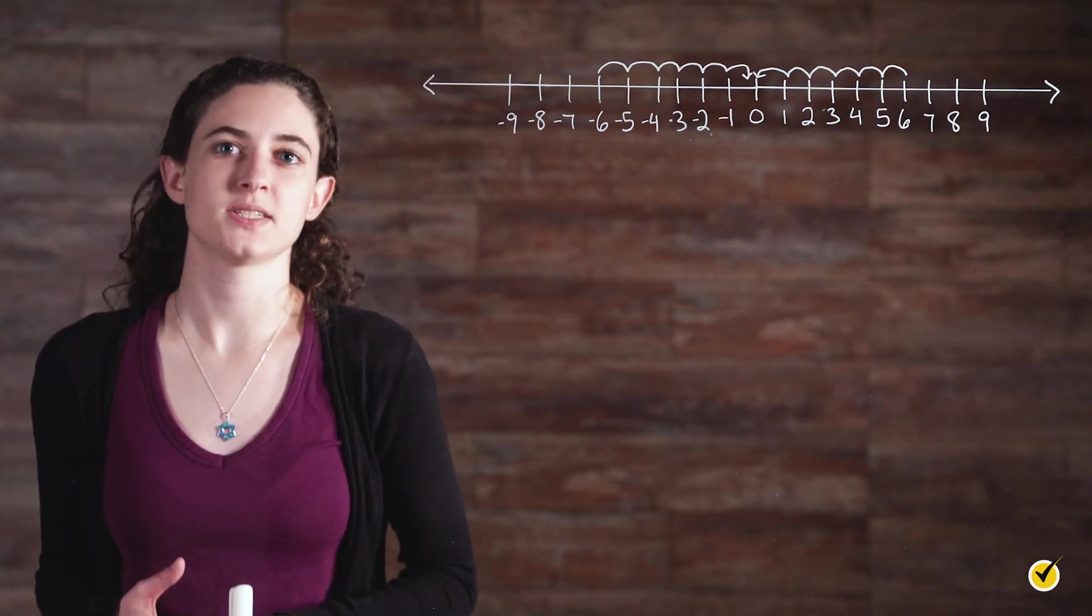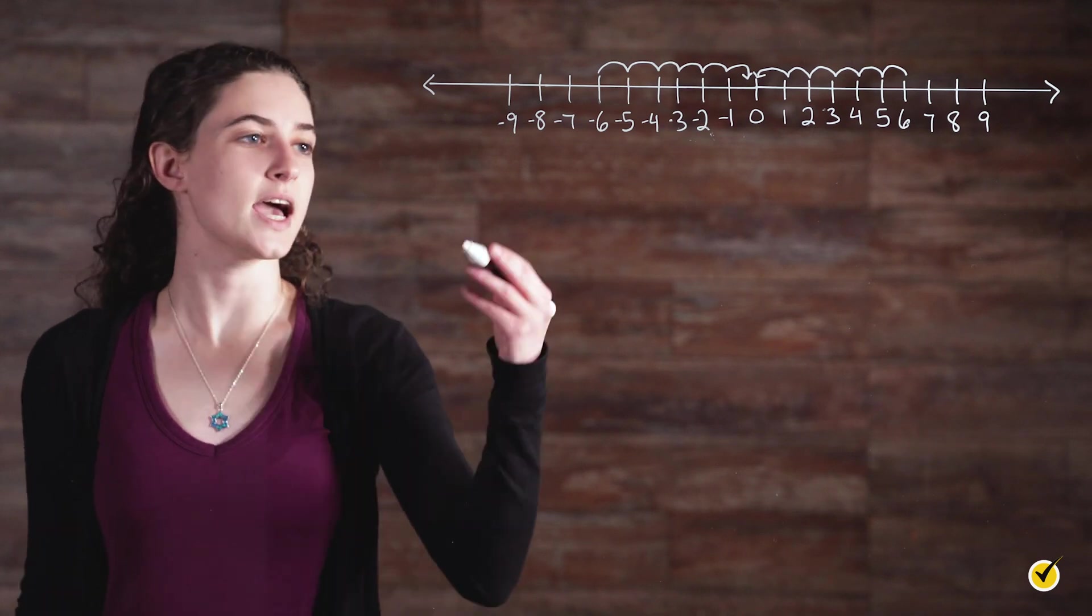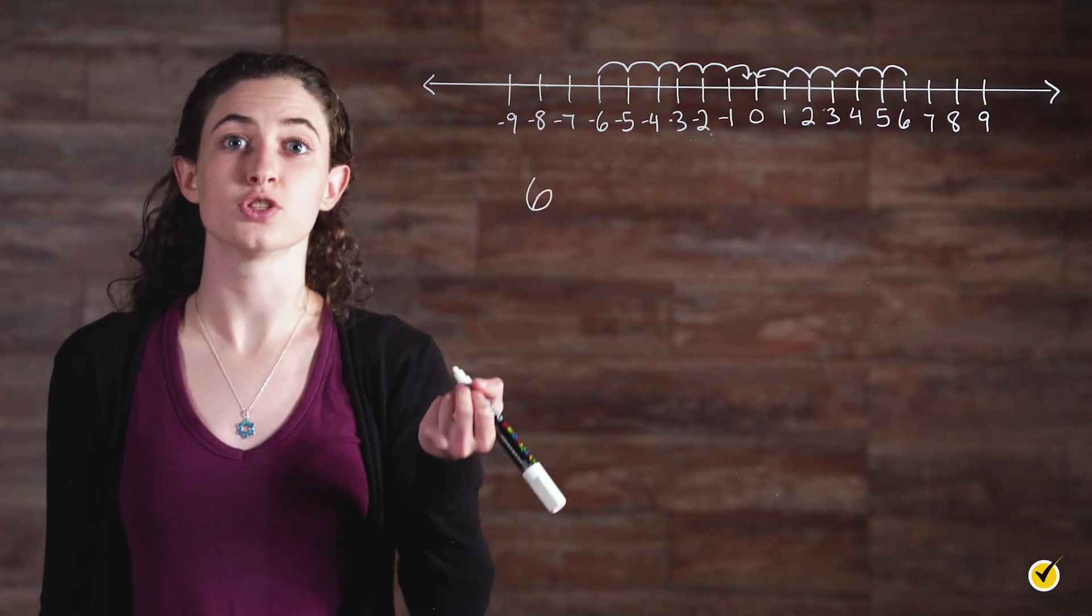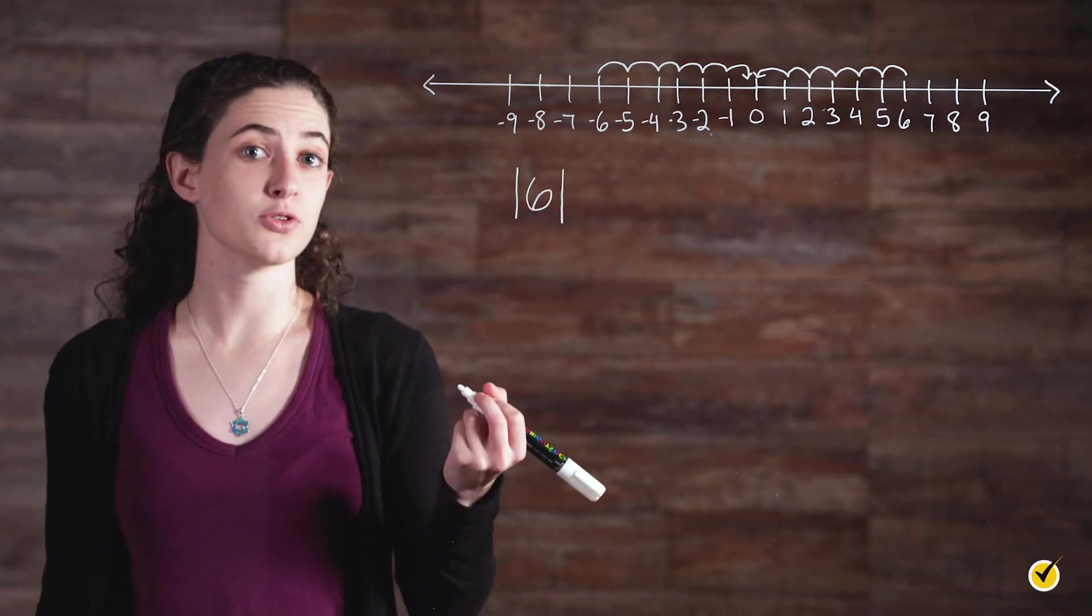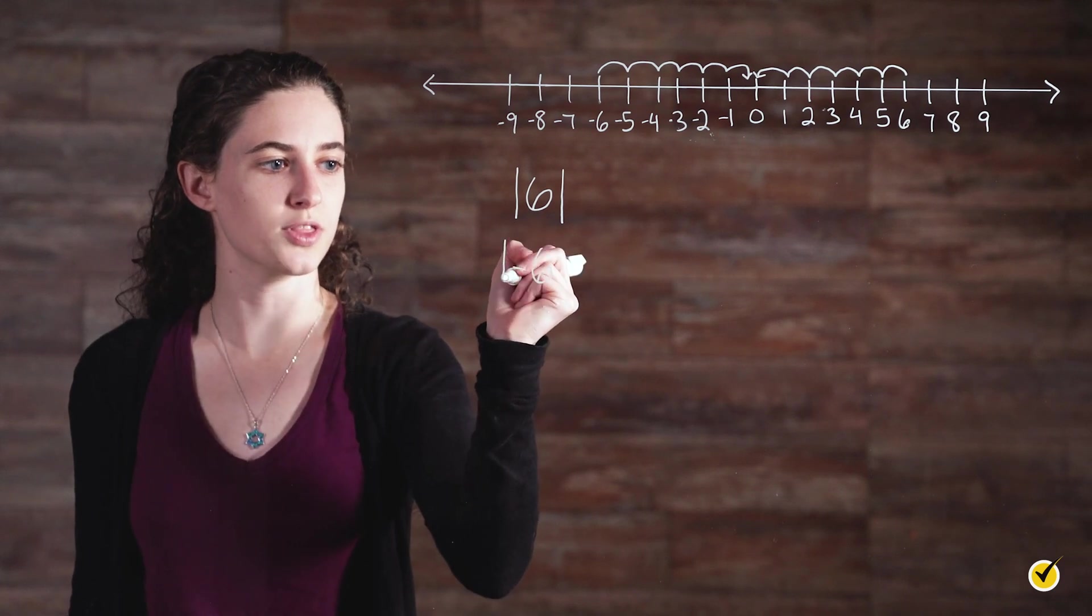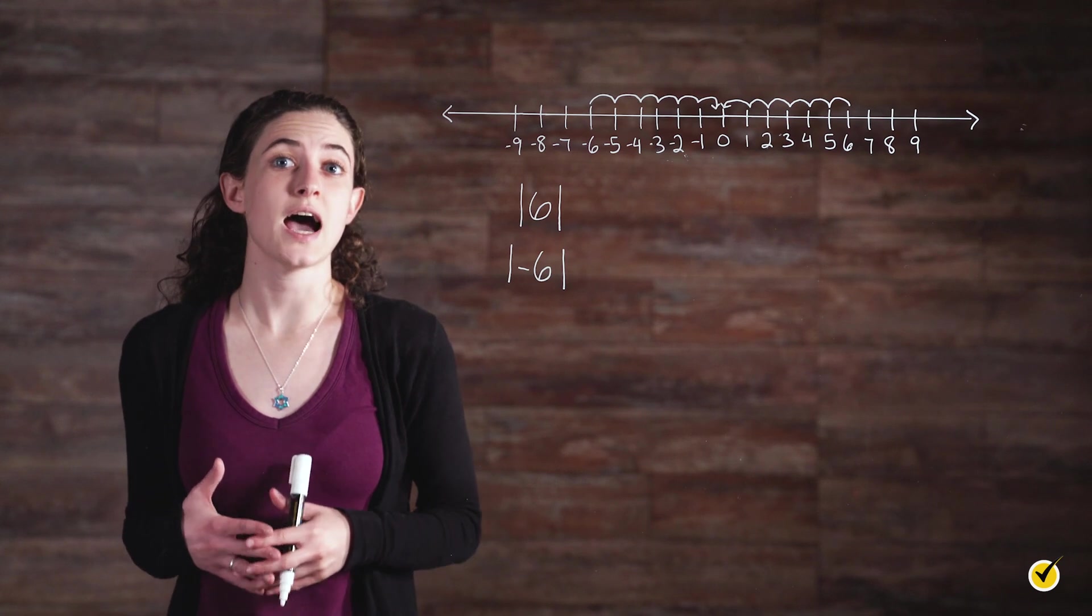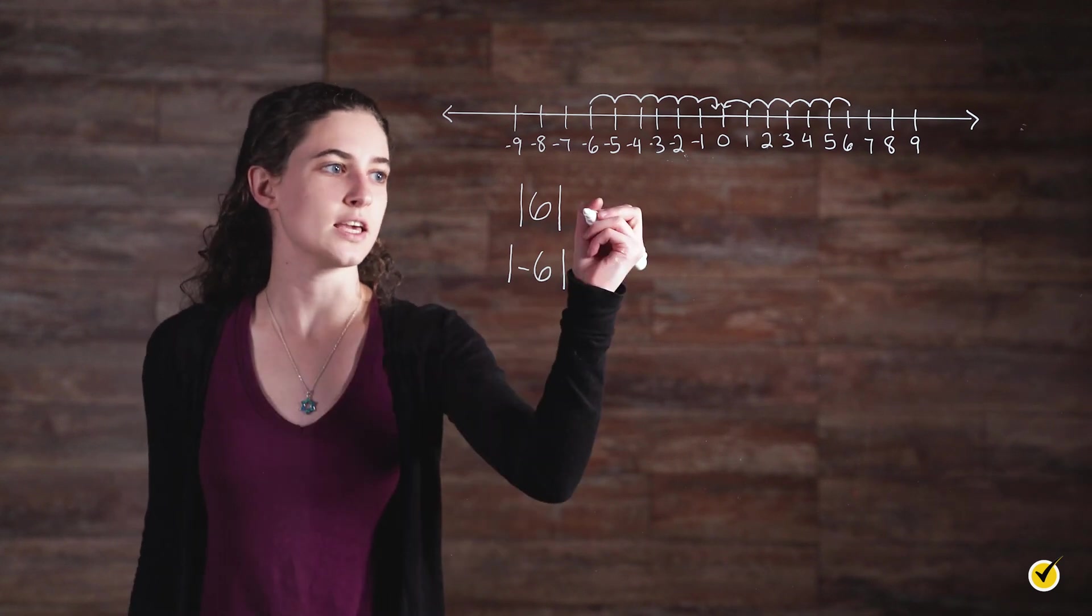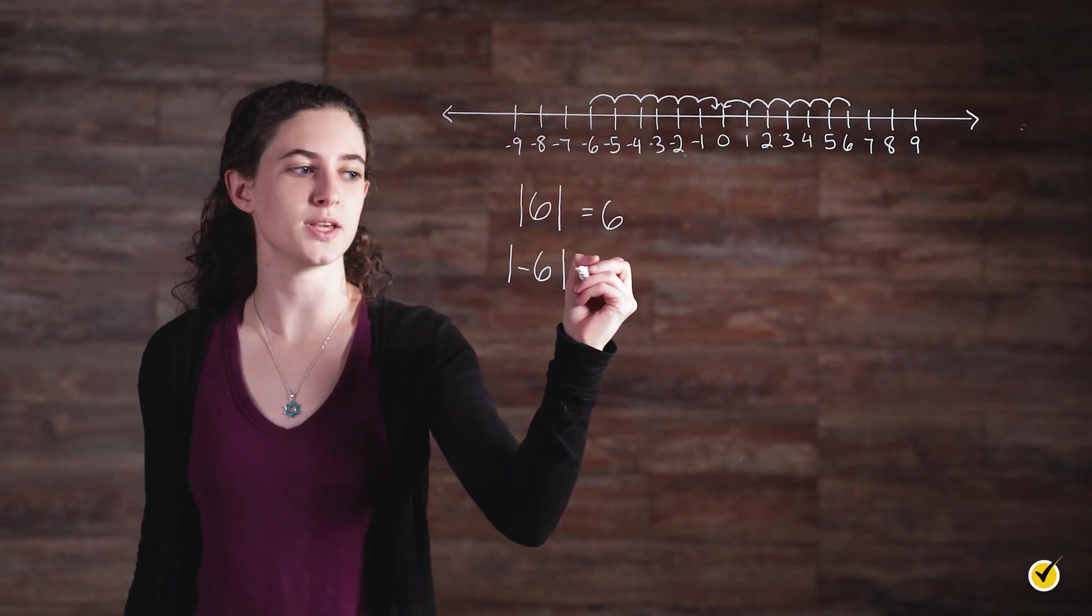Absolute value has a specific notation in mathematical expressions. For instance, the absolute value of six is denoted with two vertical lines here and here. And the absolute value of negative six is denoted as a negative six with lines on either side, just as before. Now, just as we saw, the absolute value of six equals six, and the absolute value of negative six also equals six.